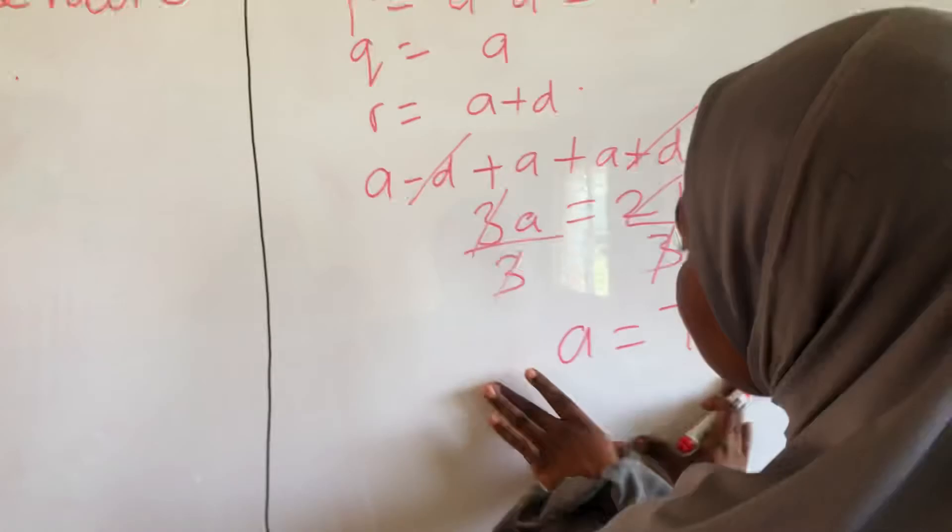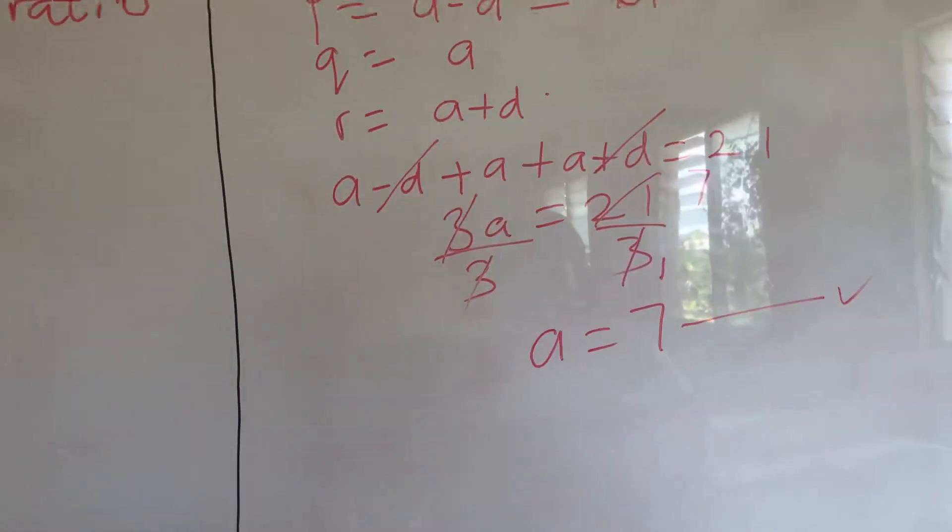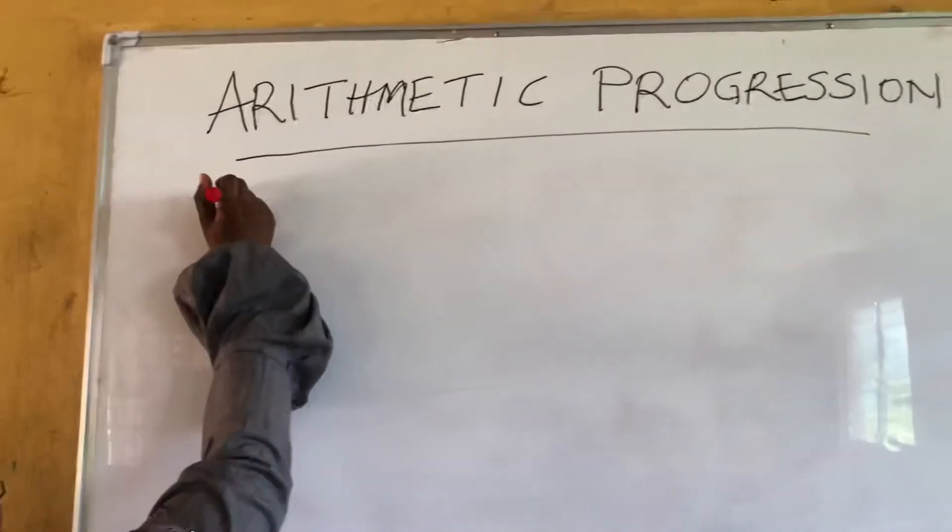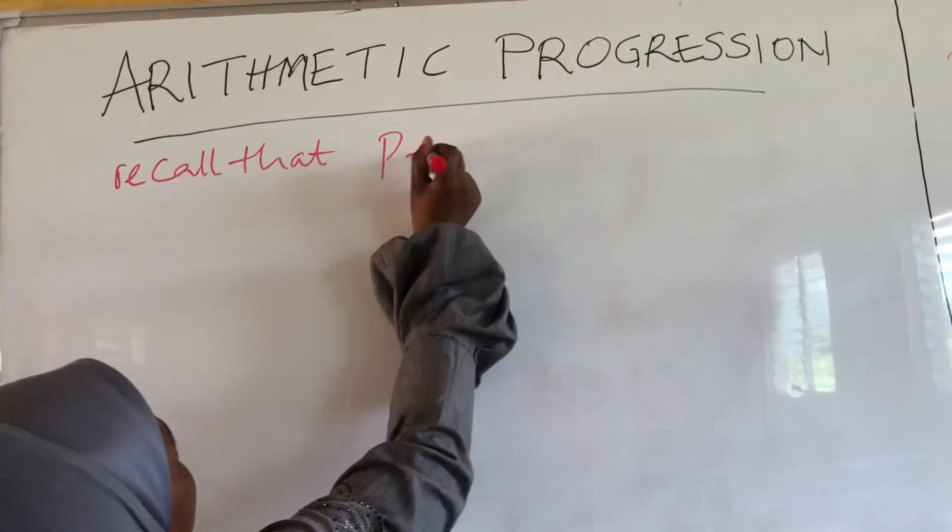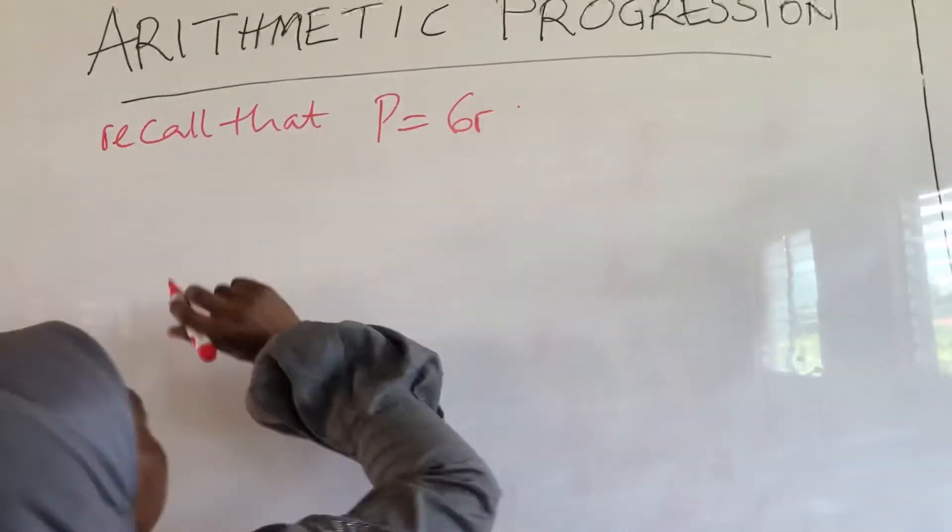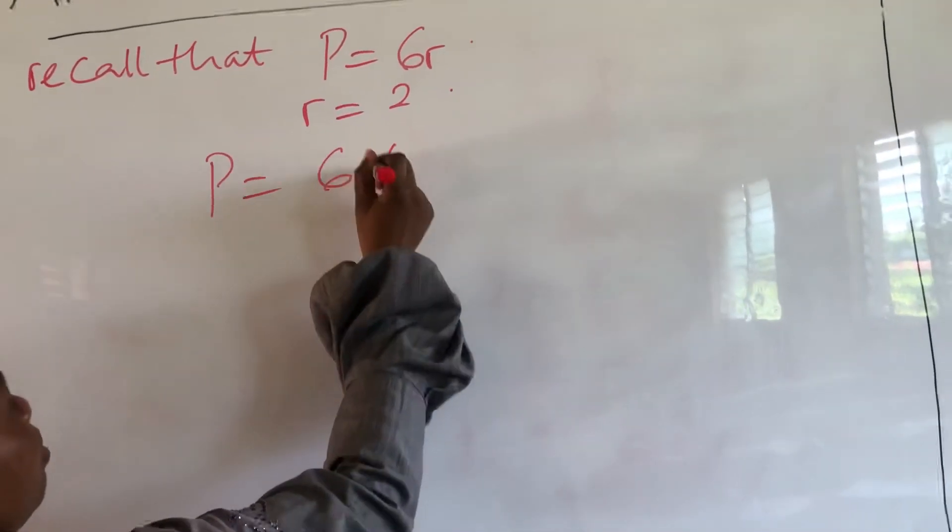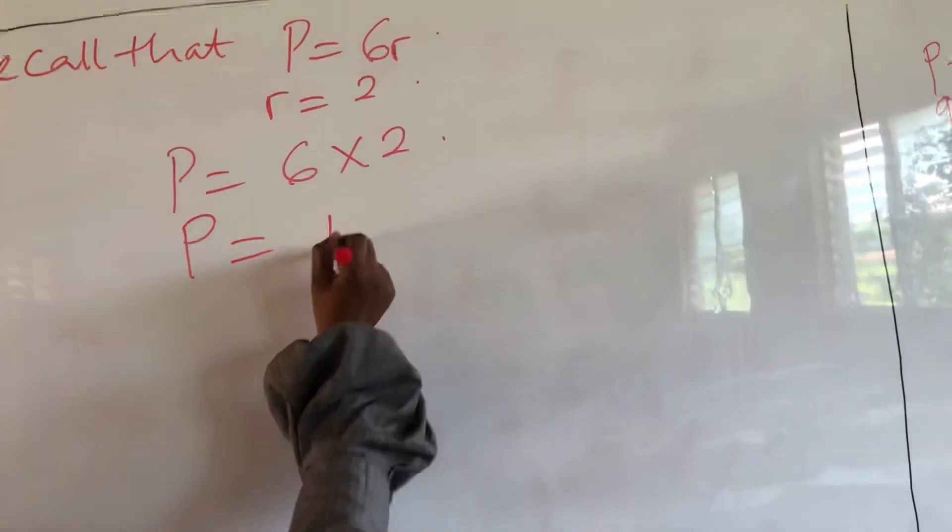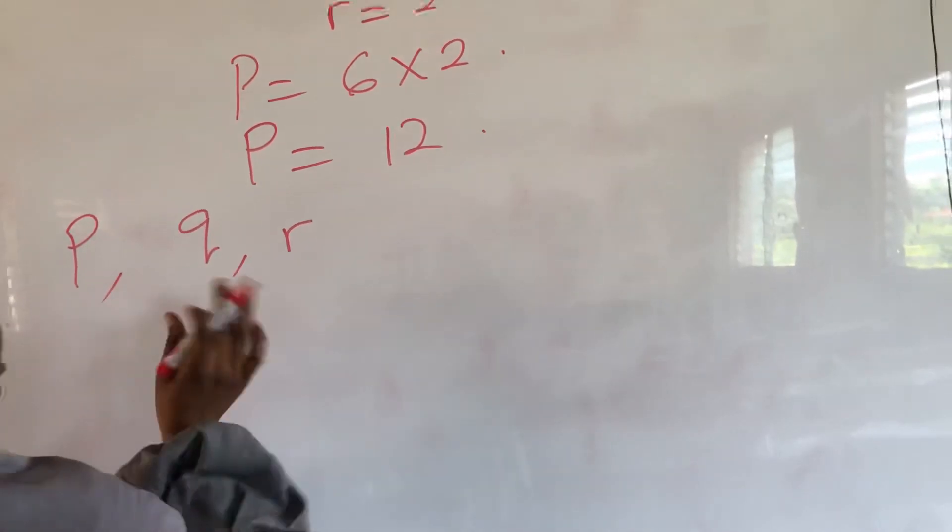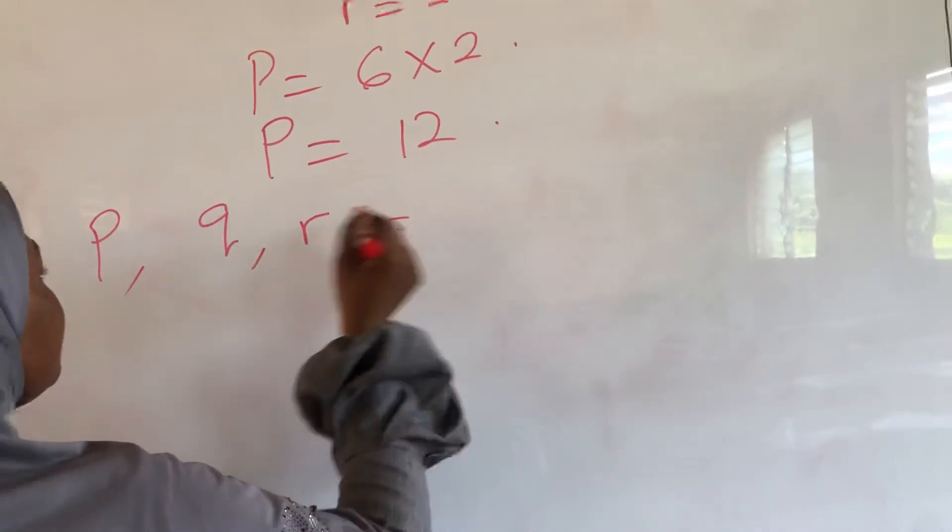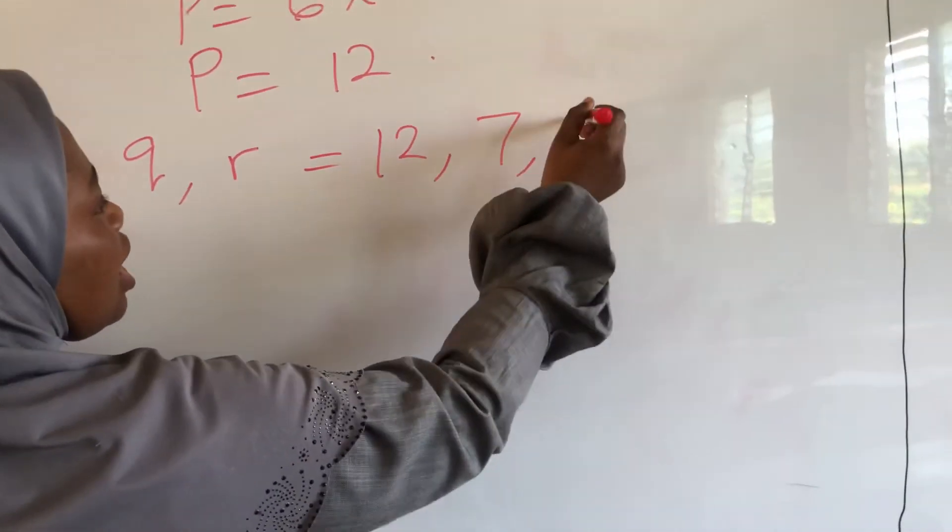Now, since we have known this one, we can easily find the value of D as well. And recall that P is equal to 6R. We have known the value of R to be equal to 2. So, that means P is equal to 6 multiplied by 2, P is equal to 12. So, P, Q, R, let's write their value. P is equal to 12, Q is equal to 7, and R is equal to 2.